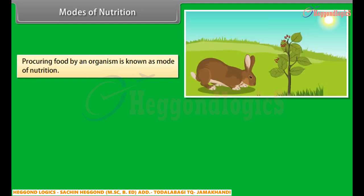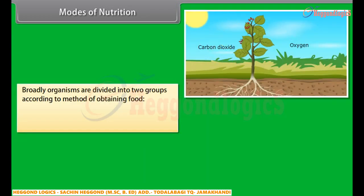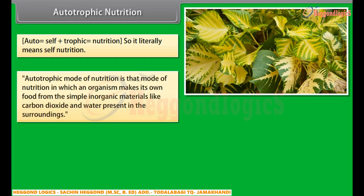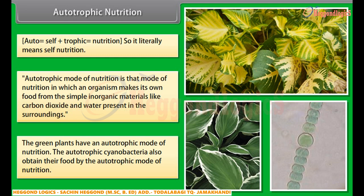Procuring food by an organism is known as its mode of nutrition. The general requirement for energy and materials is common to all, but it is fulfilled in different ways, so every organism has a different mode of nutrition. Broadly, organisms are divided into two groups according to their method of obtaining food: autotrophic and heterotrophic. The green plants and autotrophic cyanobacteria obtain their food by the autotrophic mode of nutrition.